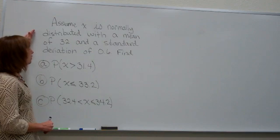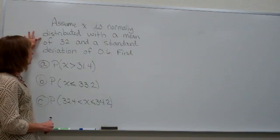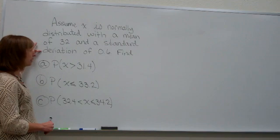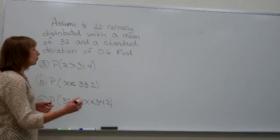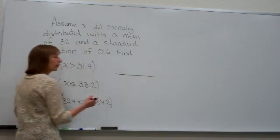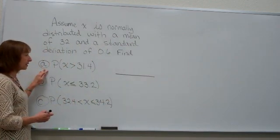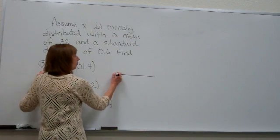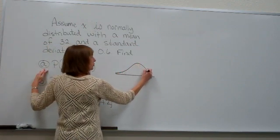So when we're saying that we want to assume that x is normally distributed with a mean of 32 and a standard deviation of 0.6, we can first think of what our sketch of our region would be that they want us to find for this probability. So remember, a normal distribution is bell-shaped.